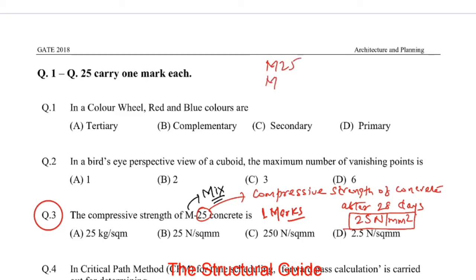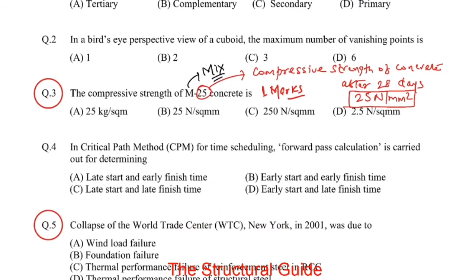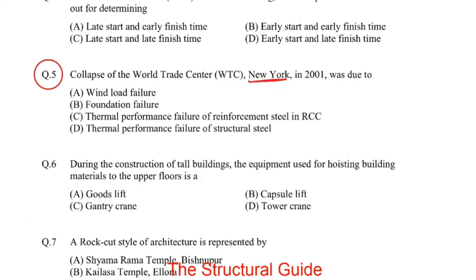Also remember the design mix proportions: M25 is 1:1:2, M20 is 1:1.5:3, M15 is 1:2:4, and M10 is 1:3:6. These proportions are of cement, sand, and aggregate. Do remember all these design mix proportions.